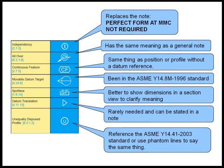The movable datum target symbol came out in 1996 in the Y14.8 standard, so if you want to use that without a note, you can just reference the Y14.8 standard. Spot face: it's better to show the dimensions for the spot face so everybody's clear on what you mean, because the subtle difference between spot face and counterbore can cause lawsuits. Datum translation symbol is rarely needed and can be handled with a note, similar to the movable target symbol. The U in a circle first came out in 2003 in the Y14.41 standard, so you can reference Y14.41 or use phantom lines to indicate unequal or unilateral tolerance as we did in 1994.